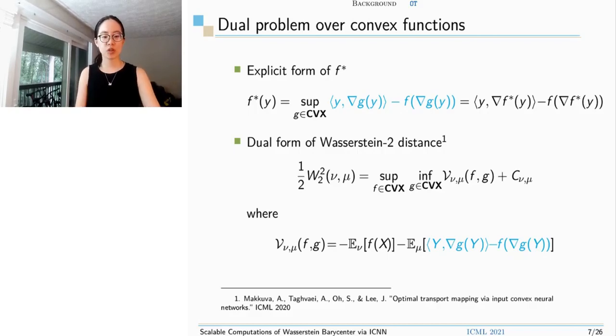However, how do we constrain this f and g to be convex? Fortunately, a recent proposed method called input convex neural network could solve this.